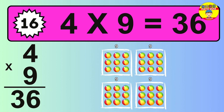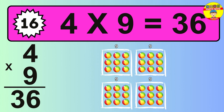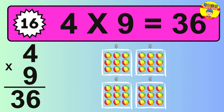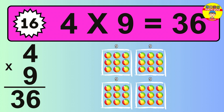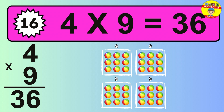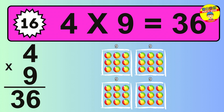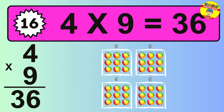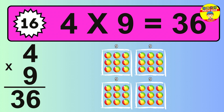The answer is 4 times 9 is 36. To calculate, we have 4 groups with 9 balls each one. So, how many balls do we have? 36 balls.